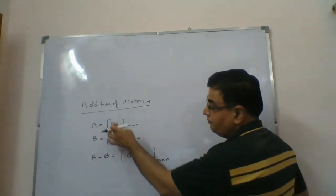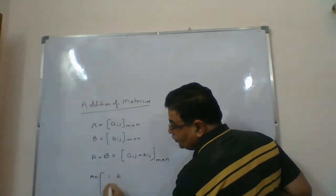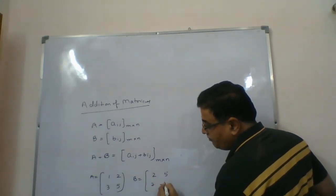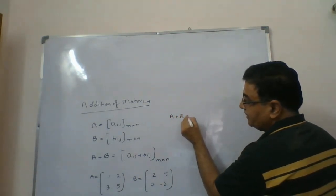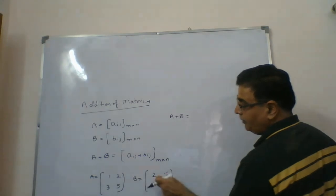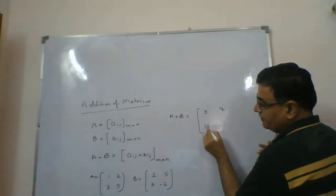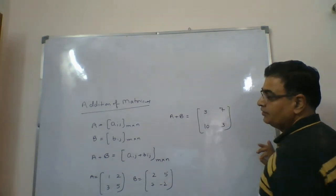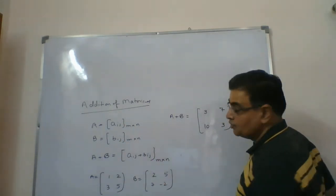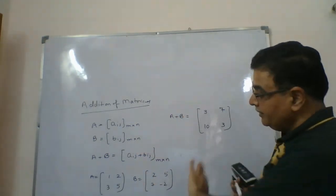For example, if matrix A has elements 1, 2, 3, 5 and matrix B has elements 2, 5, 7, minus 2, and we want A plus B — since they are of the same order, we add corresponding elements: 1 plus 2 gives 3, 2 plus 5 gives 7, 3 plus 7 gives 10, and 5 plus minus 2 gives 3. This is the addition of two matrices — simply add the corresponding elements to get the result.